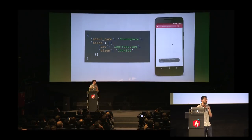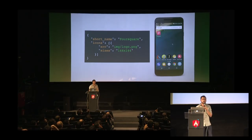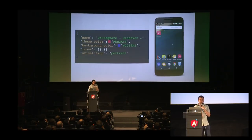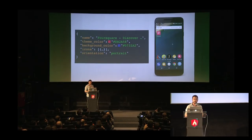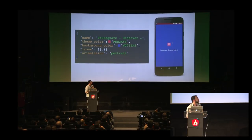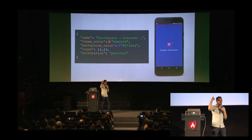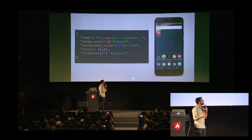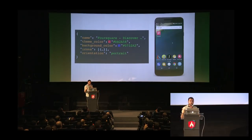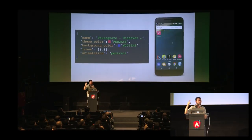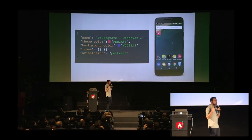The manifest pulls up your icon and short name — the user can change the short name if they want. You can also specify a full name. Once you have the icon on the home screen and click on it, you get a splash screen automatically generated by the browser. The background color and theme color affecting the status bar both come from the manifest. You can also change the orientation — portrait for regular apps, landscape for games.